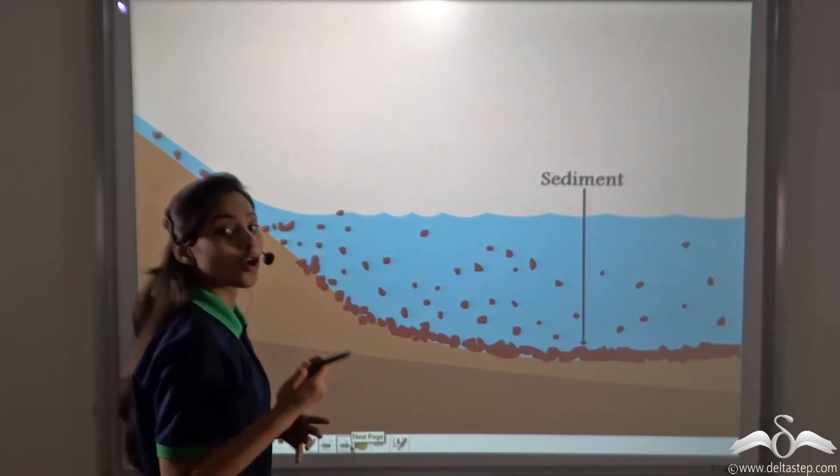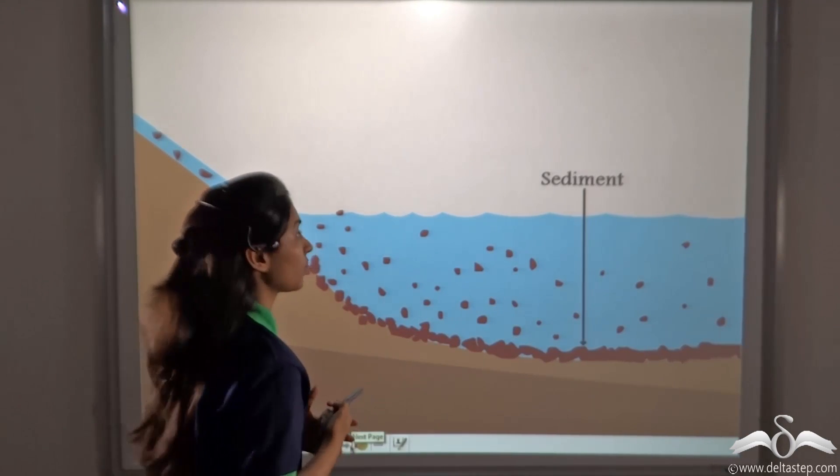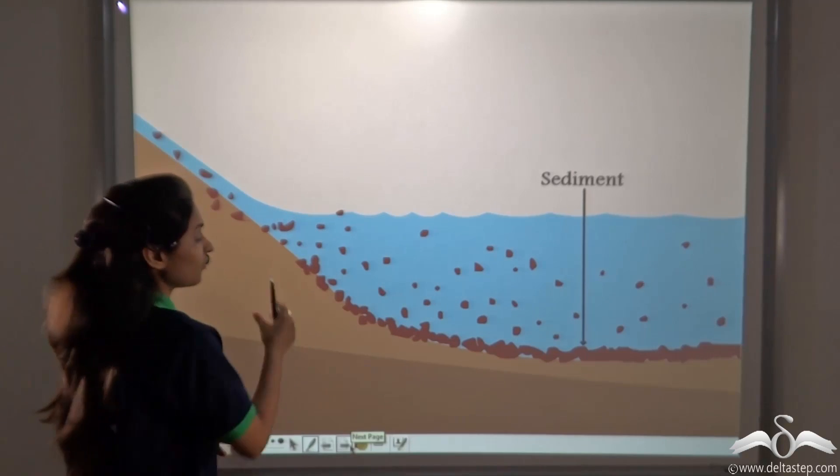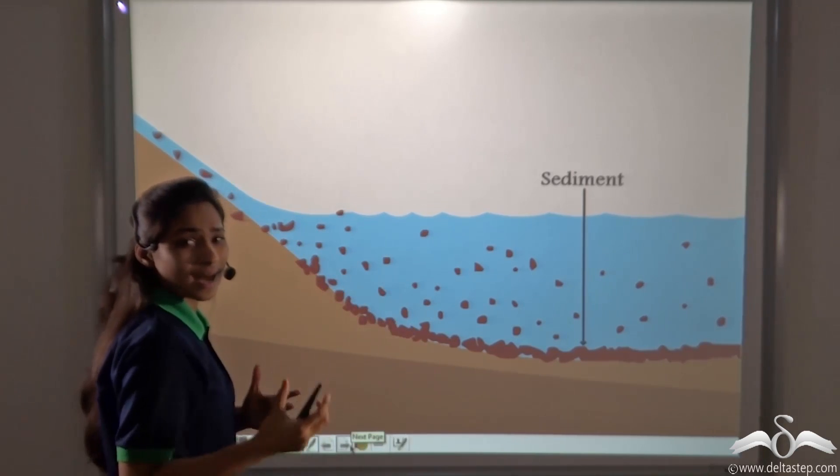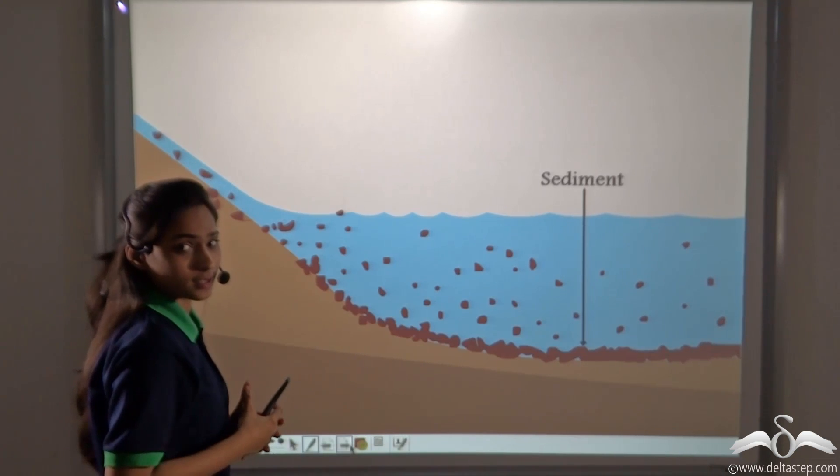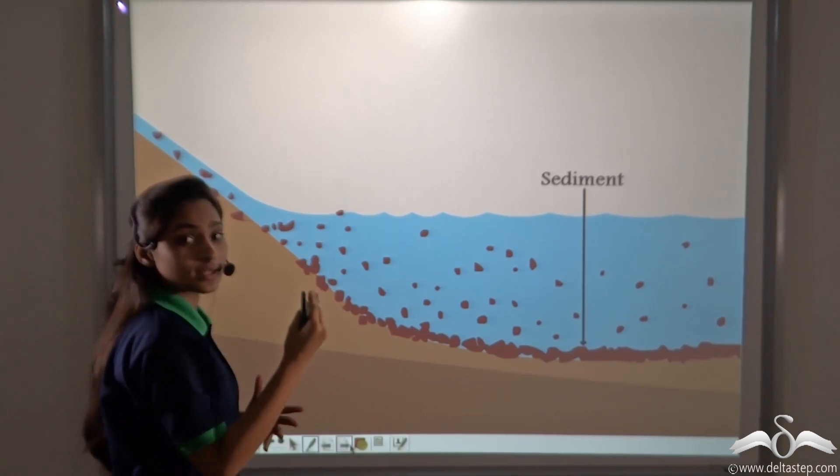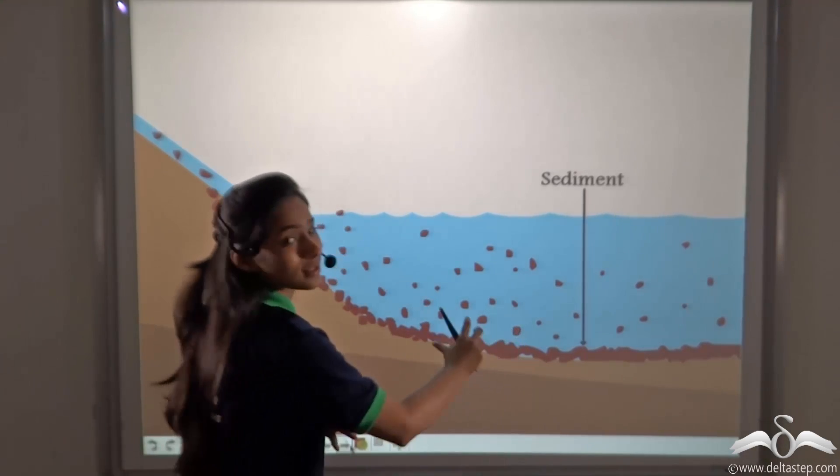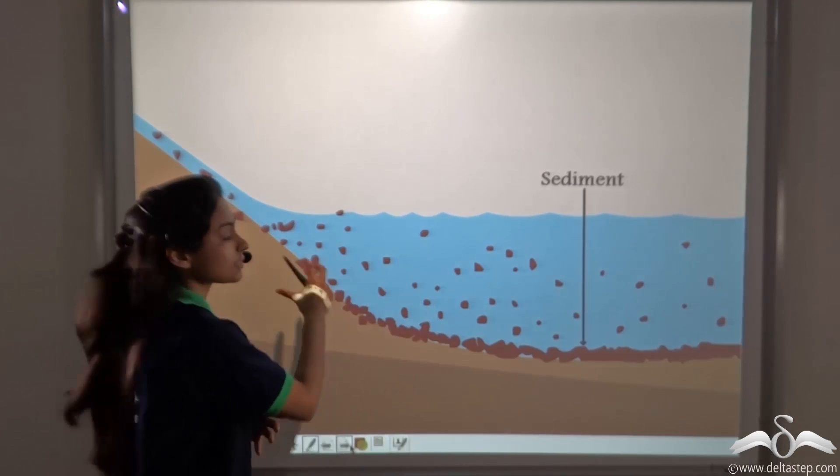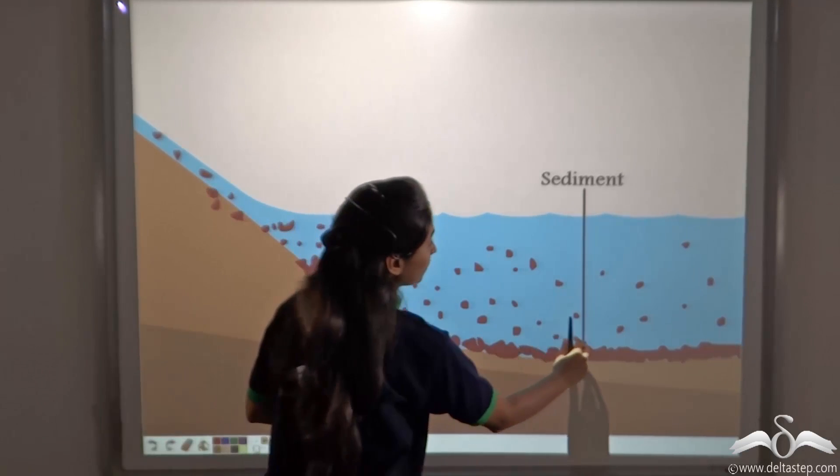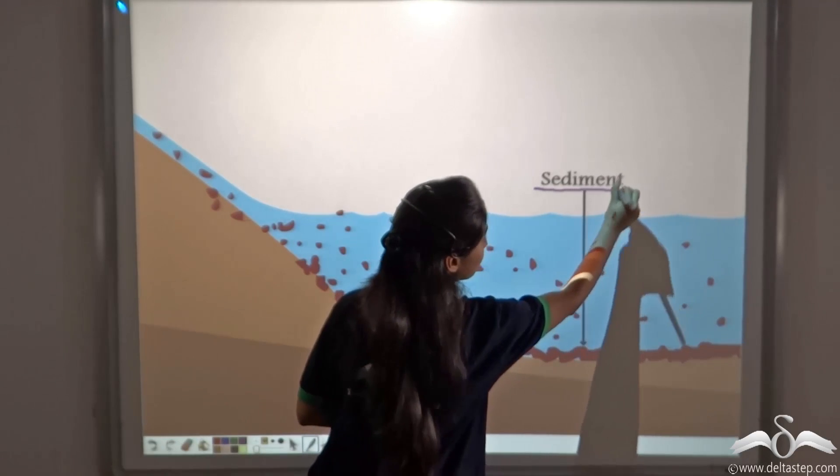In the same way, rocks can also be formed. When a river flows, it carries pieces of broken rock, sand, gravel, and other materials. When this reaches the lake or sea, the transported rocks, gravel, and other materials settle at the bottom. This settling at the bottom is also called sediment.